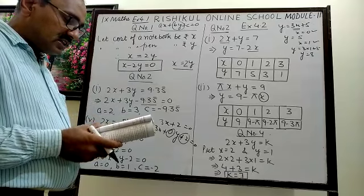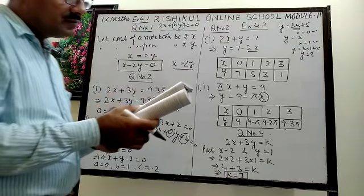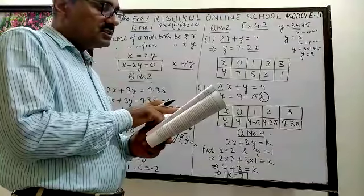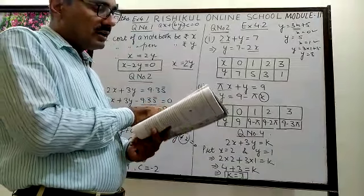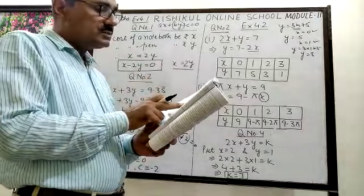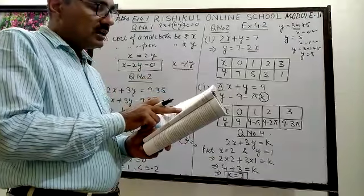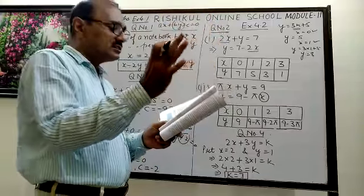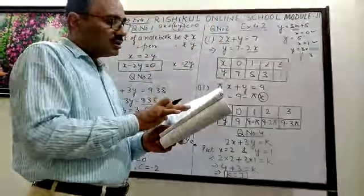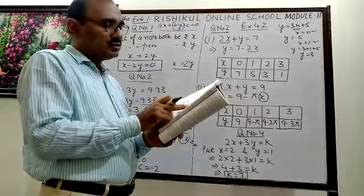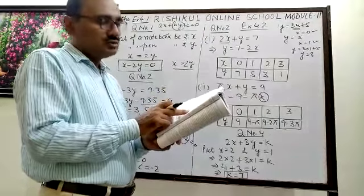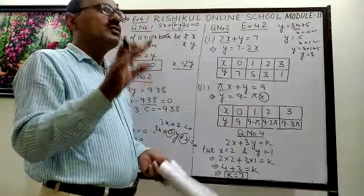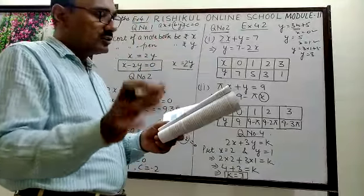Now I will discuss question number 3; question 4 you can do yourself. For the first part, check which of the following are solutions of the equation x minus 2y equals 4. Put x equals 0 and y equals 2 in the left-hand side. If the left-hand side equals the right-hand side, it is a solution; otherwise it is not. For the second part, put x equals 2 and y equals 0 — if LHS equals RHS it is a solution, otherwise it is not a solution.